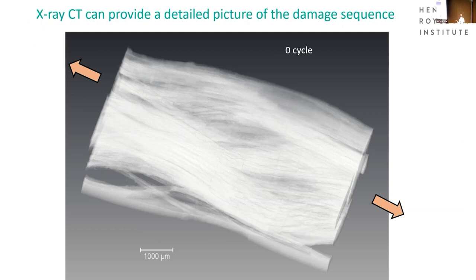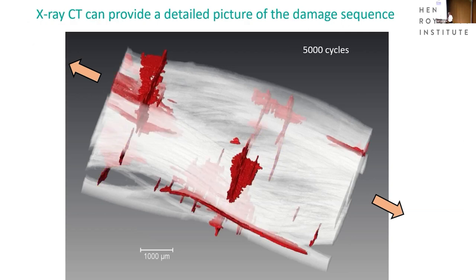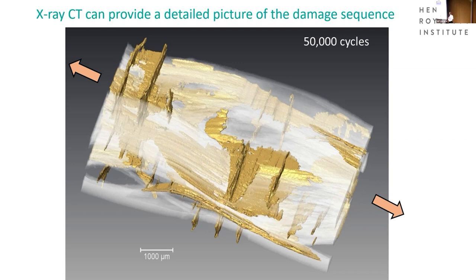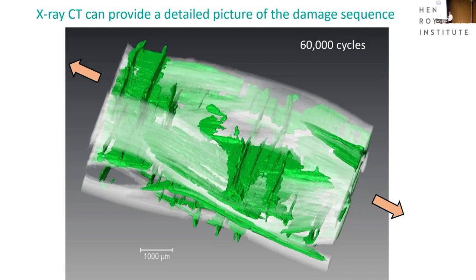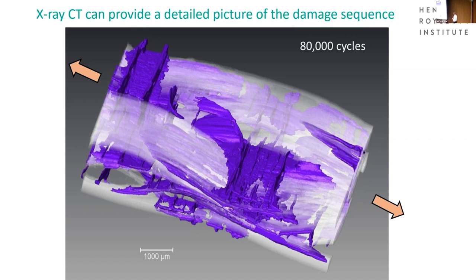Here we can see a unit cell taken from that woven structure, with the matrix removed so you can just see the fibres and the damage. It's fairly damage-free in the as-made case. Within a thousand cycles, transverse ply cracks start to occur, normal to the applied load. As we go on, the periodicity between those increases and their size increases. We start to get cracks running parallel to the plies. By 50,000 cycles there's a significant increase in the number of cracks and defects. By 80,000 cycles, just before failure — 80 times after the first cracks at 1,000 cycles — the damage is really quite extensive.